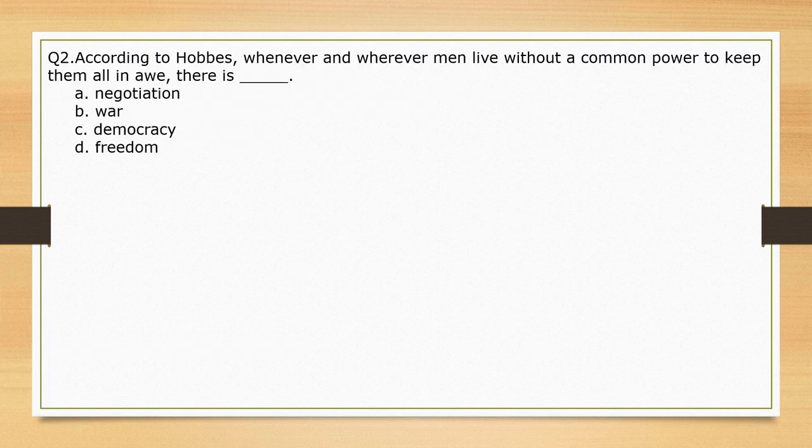According to Hobbes, whenever and wherever men live without a common power to keep them all in check, there is — options: negotiation, war, democracy, freedom. The correct option is option B: war.